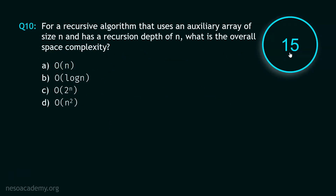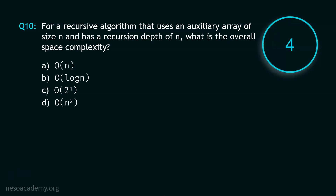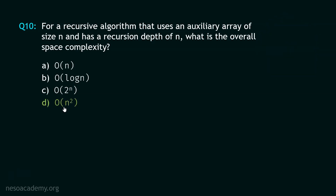And your time starts now. Stop. The correct option is option D: O(N²). If an algorithm uses an auxiliary array of size N and the recursion depth is also N, then the space complexity will be O(N²). Now let's move to question number 11.